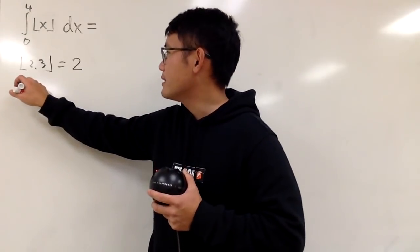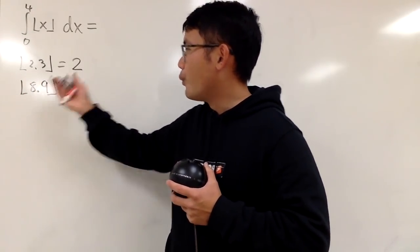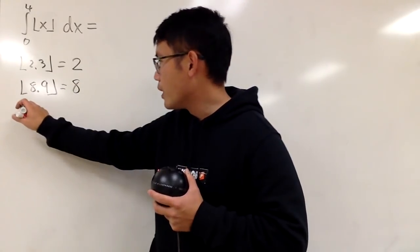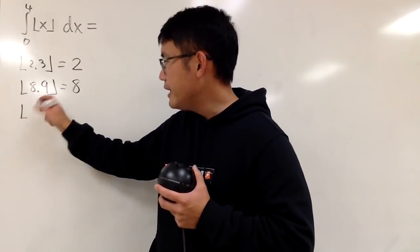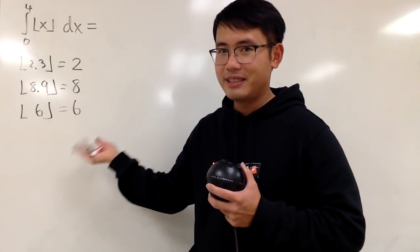And let's do another one. Let's say floor of 8.9. Well, you round down, which is 8, like that. If you have the floor of an integer already, let's say 6, this is still 6. This is good.